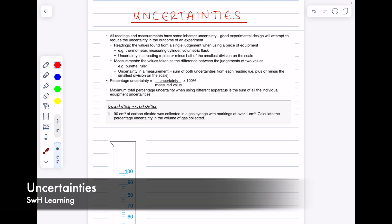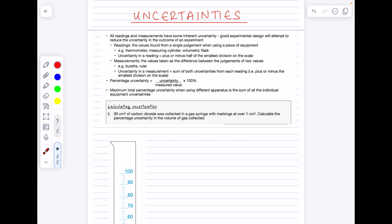Now we'll move on to discuss uncertainties. All readings and measurements that you take have an inherent uncertainty, and good experimental design will attempt to reduce the uncertainty in the outcome of an experiment. A few key terms here which you're probably familiar with.